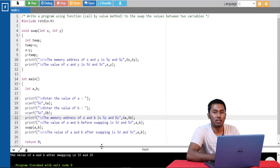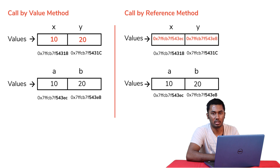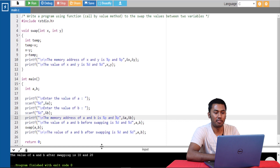Next, let's look at call by reference method. In call by reference method, the memory address is passed from the actual parameters to the formal parameters. Both the actual parameters and the formal parameters refer to the same memory location. Any changes made in the formal parameters is reflected back at the actual parameters. So let's write the same swap function using call by reference method.